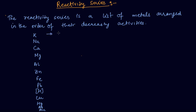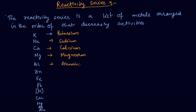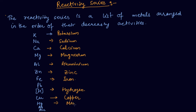Now I am writing here the names: potassium, sodium, calcium, magnesium, aluminium, zinc, iron, hydrogen, copper, mercury (Hg), then silver (Ag), and last Au, which is gold.